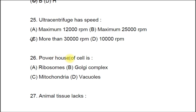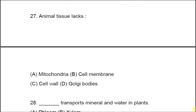Question 26: The powerhouse of the cell is A) ribosomes, B) Golgi complex, C) mitochondria, D) vacuoles. This is an easy one and the answer is C, mitochondria. Question 27: Animal tissue lacks A) mitochondria, B) cell membrane, C) cell wall, D) Golgi bodies. The correct answer is C, cell wall.